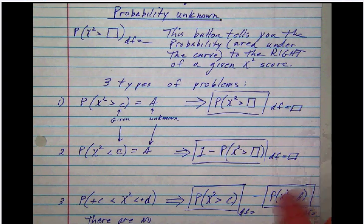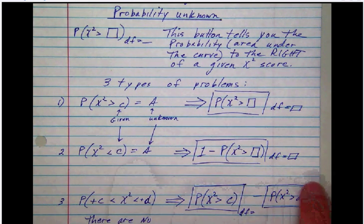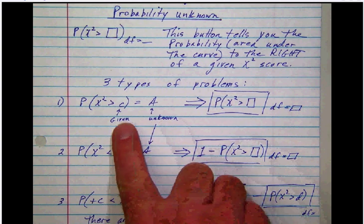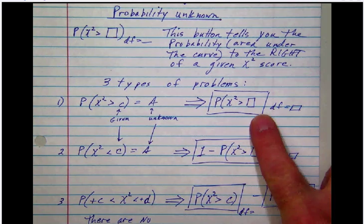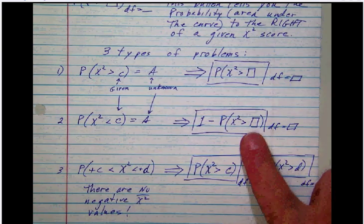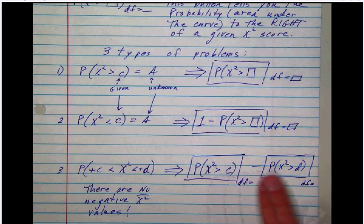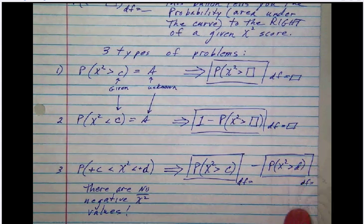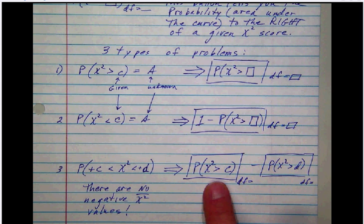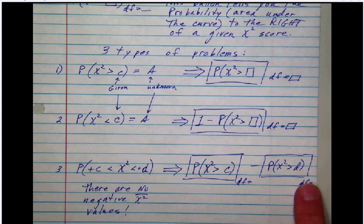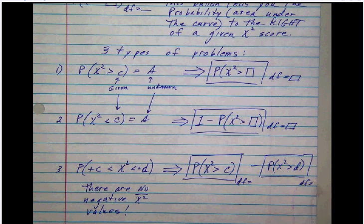We have the situation here where we have the area that's unknown to the right of a given chi-square value. Just use the button. If it's to the left, it's one minus the button. If it's a slice, then notice here that we have to use the left side minus the right side because the buttons work to the right.